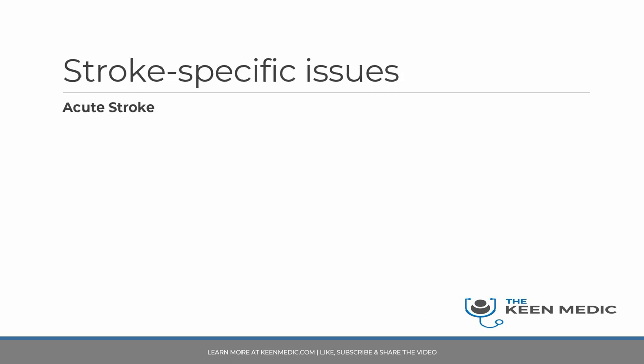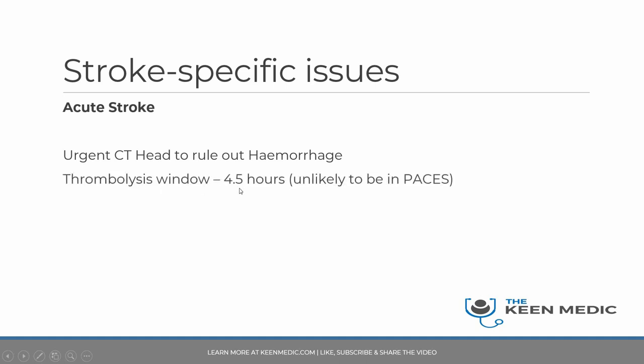In the UK, if a patient is within a certain window and has sudden-onset stroke symptoms, they are always considered for thrombolysis with alteplase. An urgent CT head needs to be done within minutes of arrival in A&E — in some departments it happens before the patient even sees a clinician if it is a FAST-positive call from the ambulance. The CT head is done urgently to rule out hemorrhage, which is the very first priority.